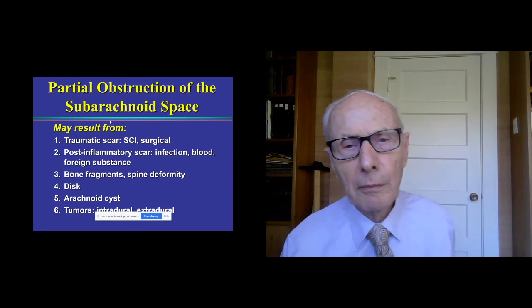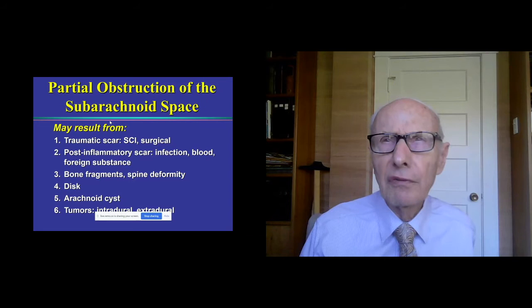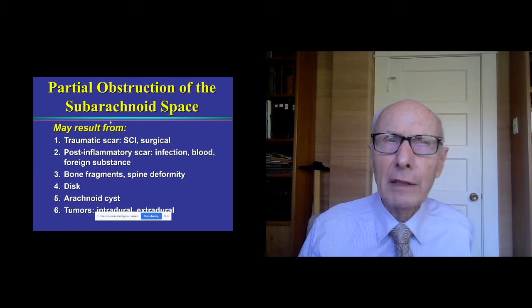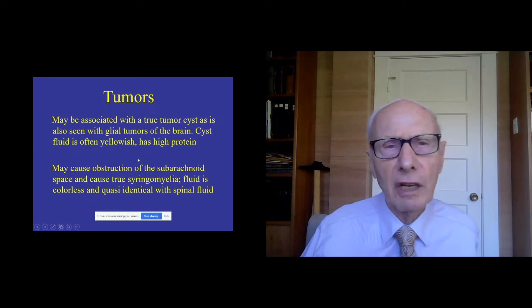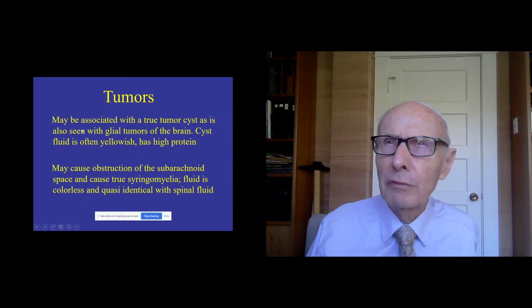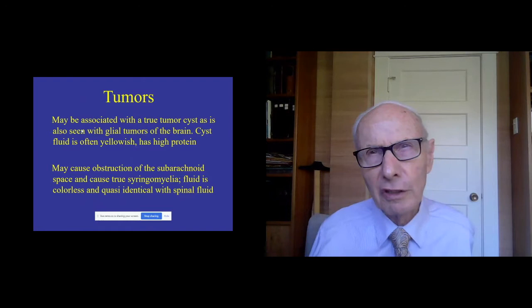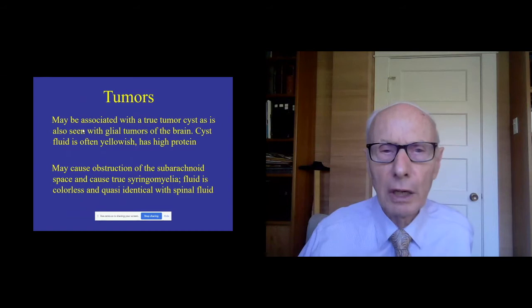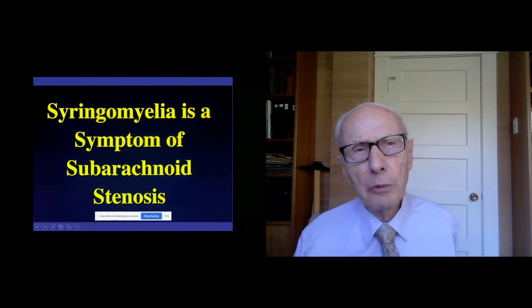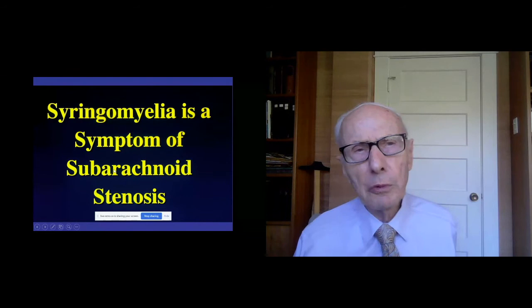In the case of tumors, there's a lot of misunderstanding. Tumors of the spinal cord may actually have a cyst, and when there's a cyst with a tumor, the cyst fluid is often yellowish and has a high protein. But if the tumor is large enough to produce blockage of spinal fluid coursing along the surface of the spinal cord, it can also result in a true syrinx with watery fluid, which is identical with spinal fluid. So in summary, syringomyelia can be regarded as a symptom of subarachnoid stenosis or subarachnoid blockage.